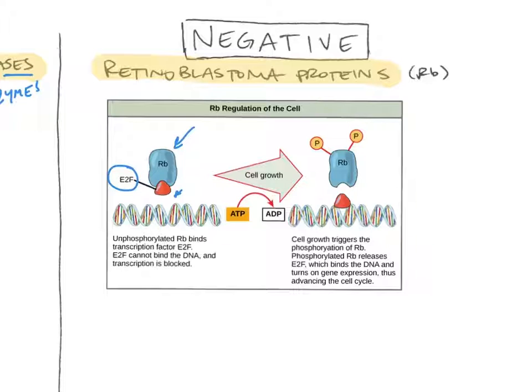As the cell grows, this retinoblastoma protein is phosphorylated. We take ATP and we lyse it into ADP. Those phosphate groups jump onto the RB. And when this happens, the retinoblastoma protein changes its shape. And that transcription factor, remember, this is E2F. It attaches to the DNA molecule, allowing transcription to carry forward. Now, this is a negative control mechanism because the cell cycle cannot carry forward when retinoblastoma is not phosphorylated. So the process is stopped by this mechanism.